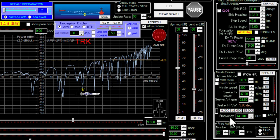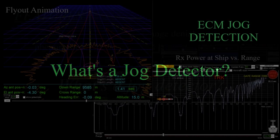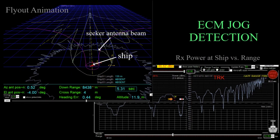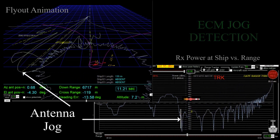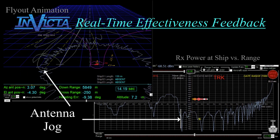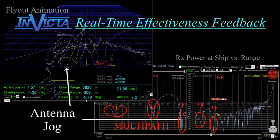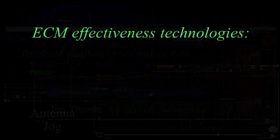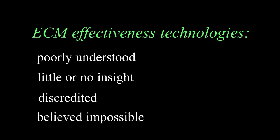This realism is important for things like jog detection and other advanced technologies for real-time in-combat ECM effectiveness assessment. A jog detector senses seeker antenna deflections caused by ECM by noticing a drop in the measured seeker power when the antenna deflection happens. The trick is that multipath also causes drops in measured seeker power, so the jog detector has to distinguish between the two.